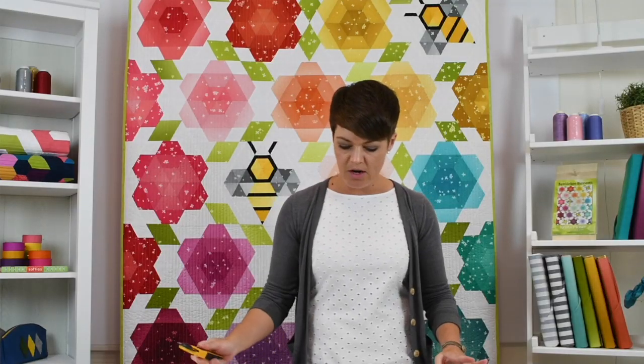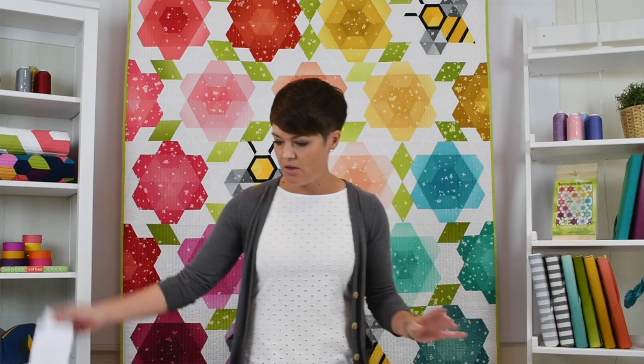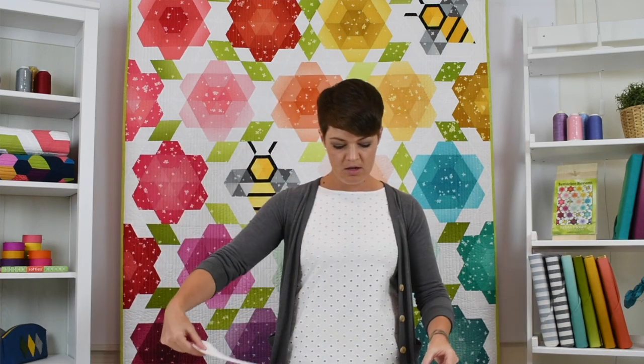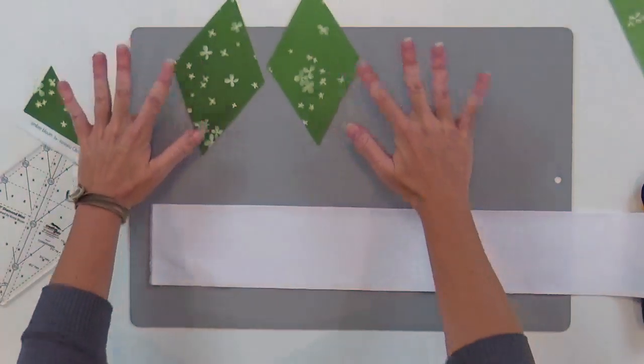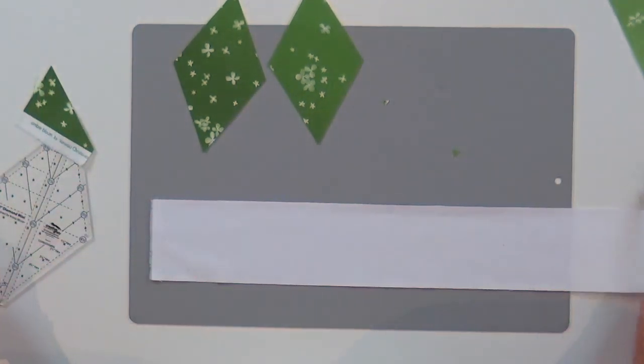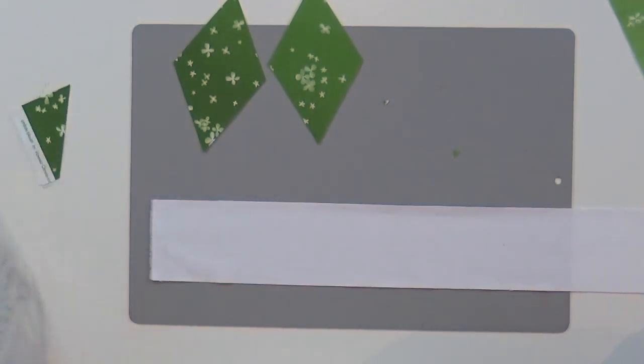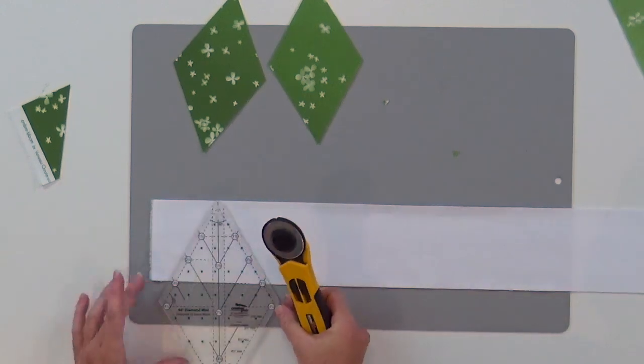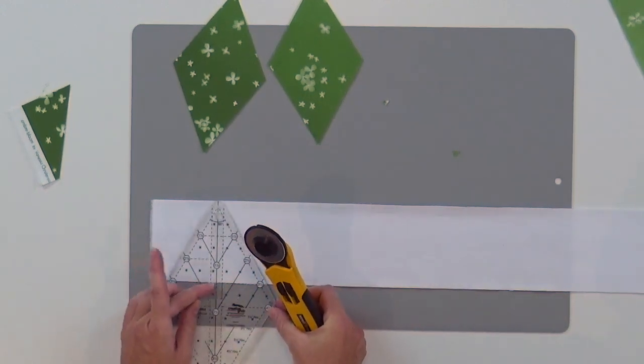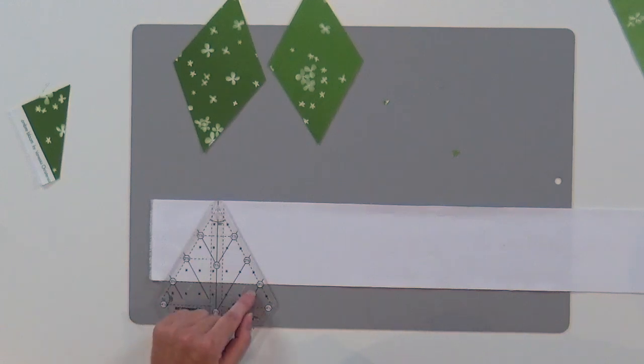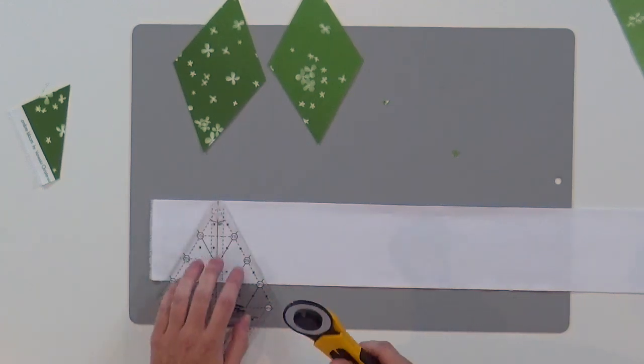So the background from these leaves is also cut from a three and a half inch strip here. Just got my background white. Now these are triangles. And from here, I'll lay the ruler down. I've got my three and a half inch triangle edge.